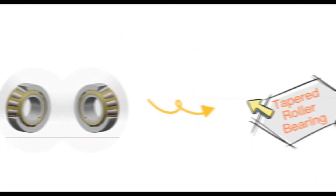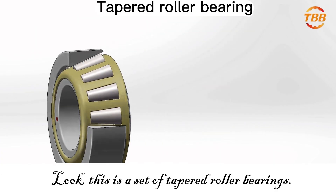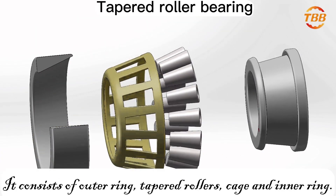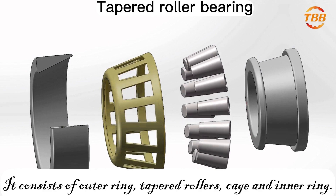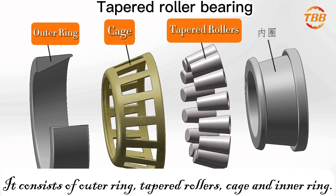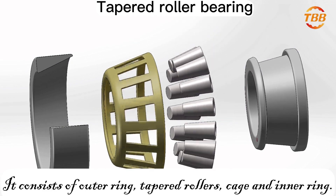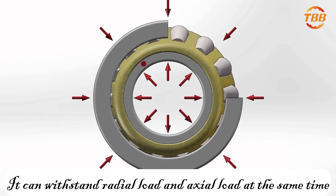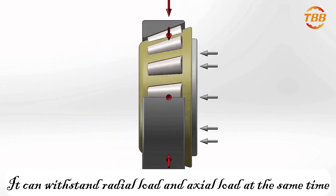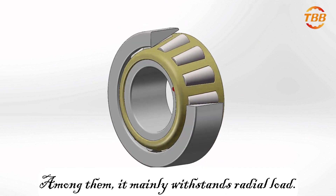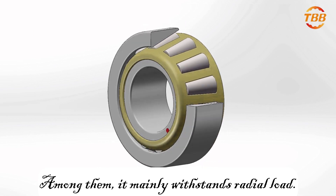This is a set of tapered roller bearings. It consists of outer ring, tapered rollers, cage, and inner ring. It can withstand radial load and axial load at the same time, and among them, it mainly withstands radial load.